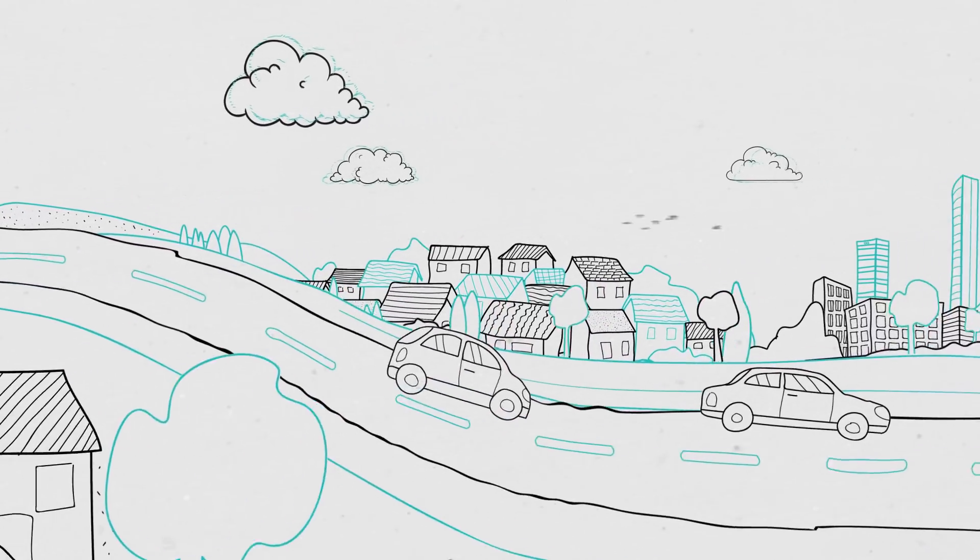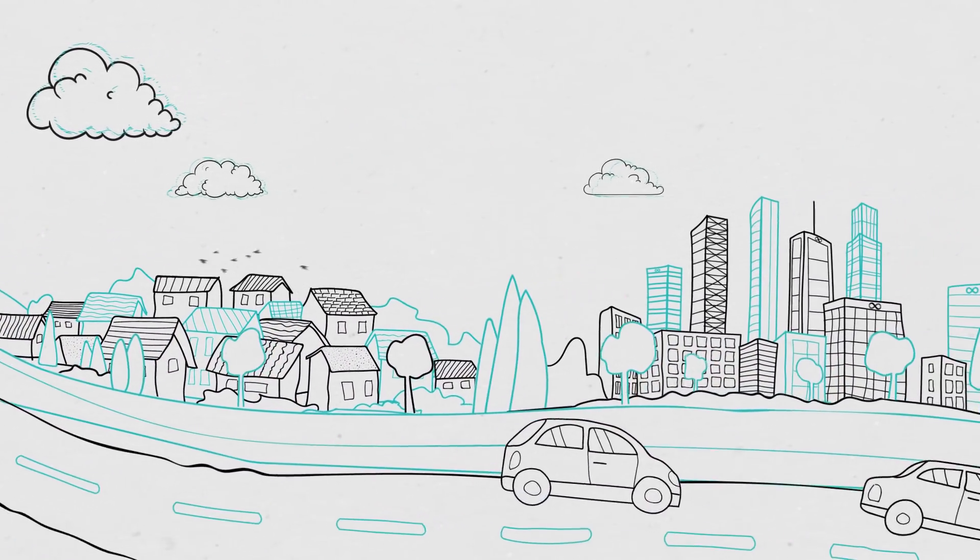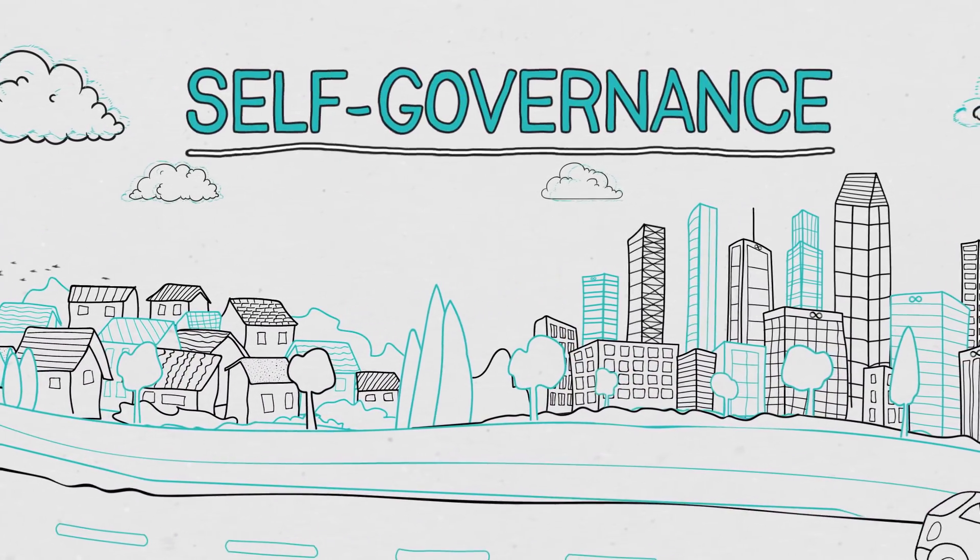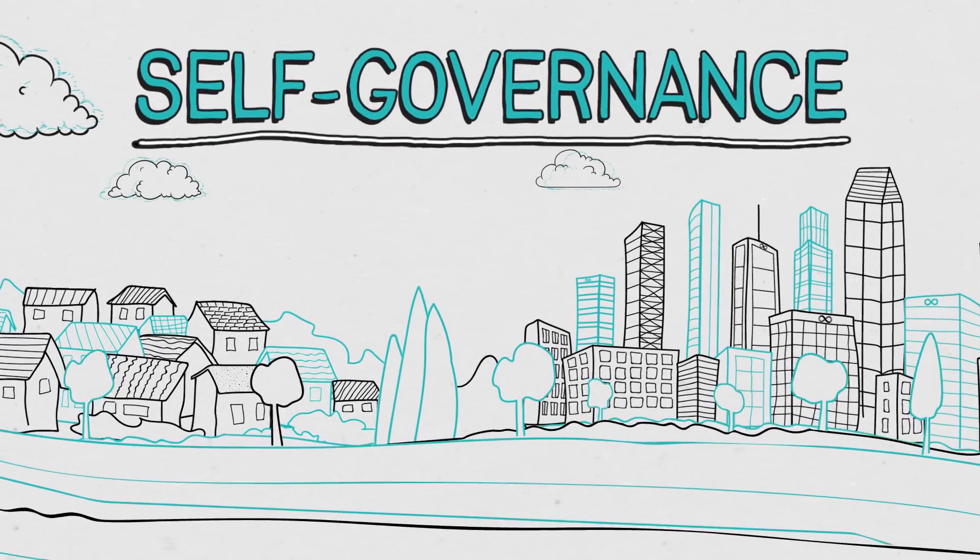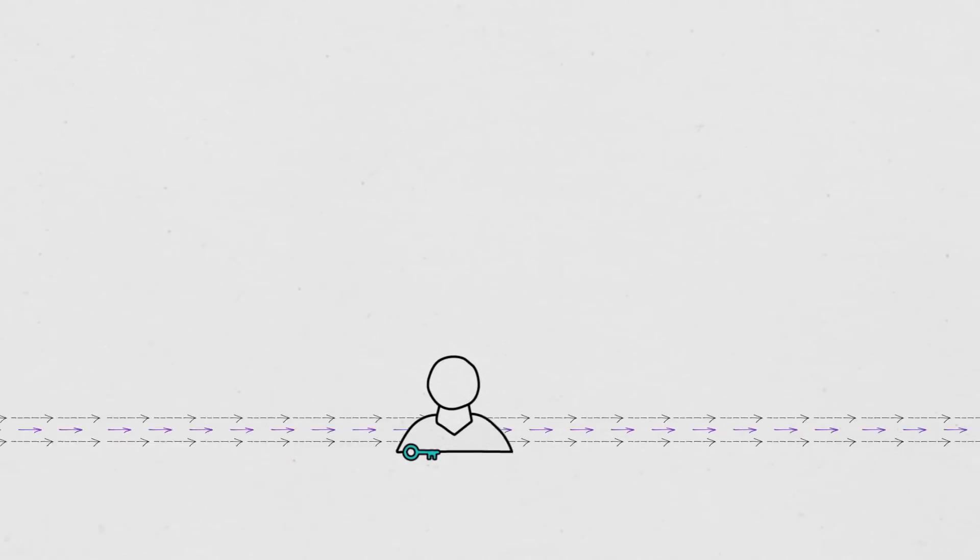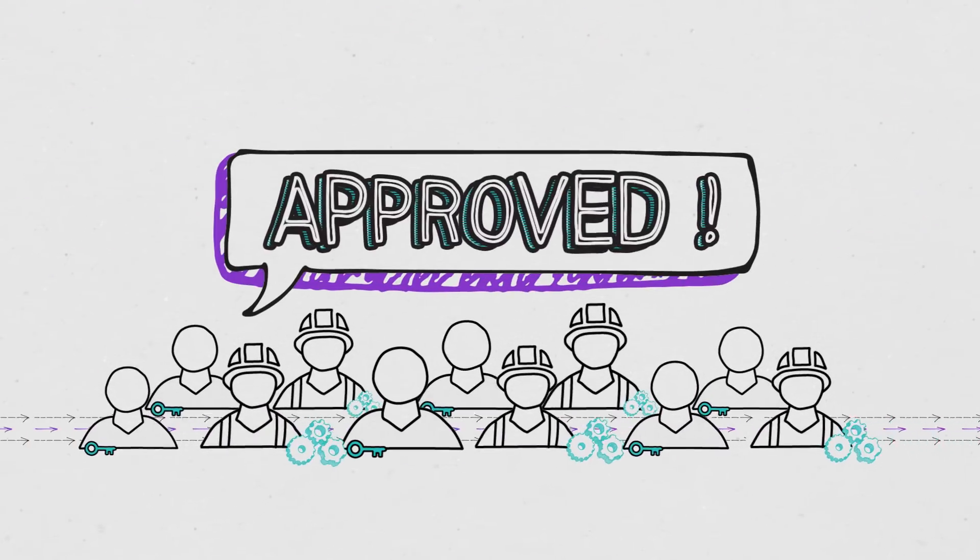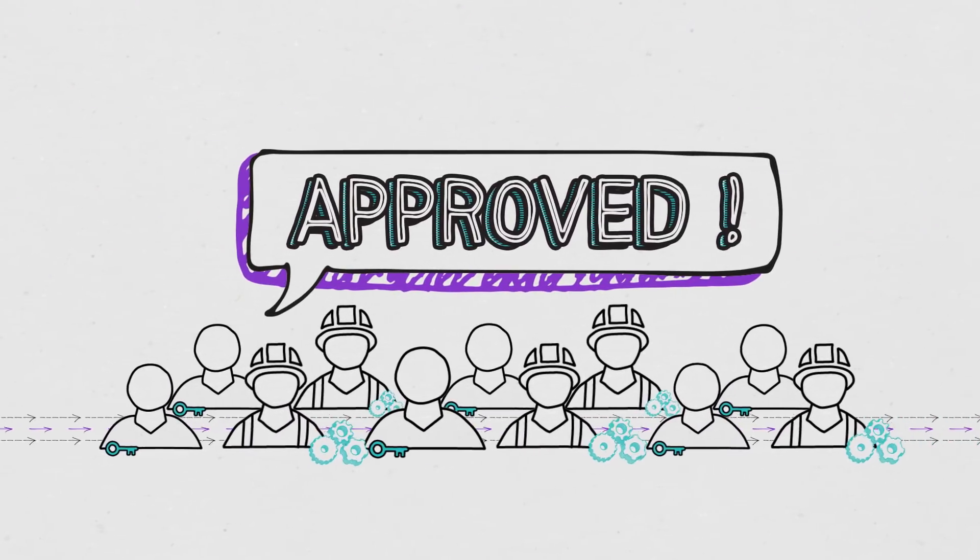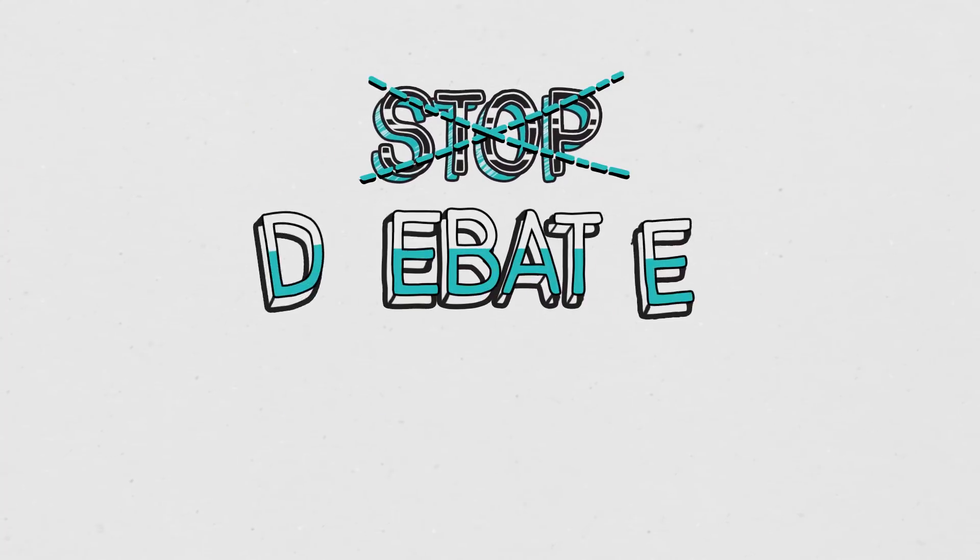DFINITY will be a powerful public resource. Made even more powerful by its robust system of self-governance that allows the network to be fully adaptive. The blockchain nervous system monitors and updates the network seamlessly. By harnessing the expertise of the crowd to train its algorithmic governance. To make the best decisions without ever having to stop, debate and restart.